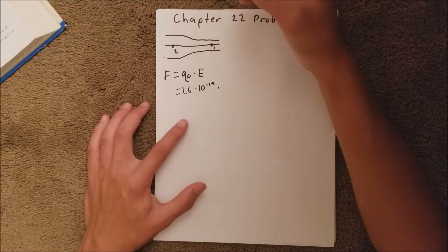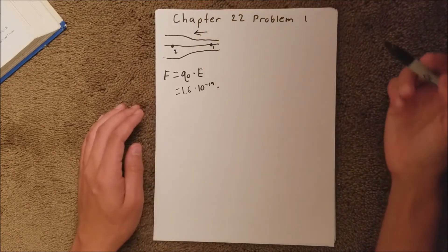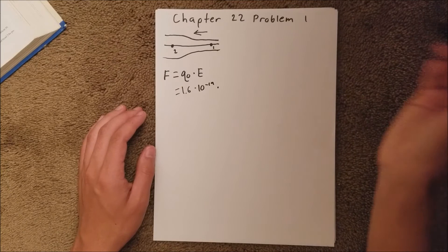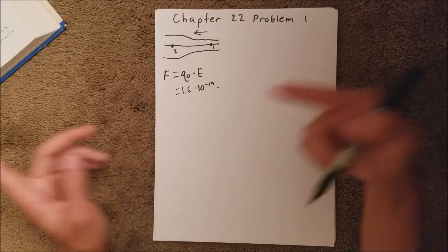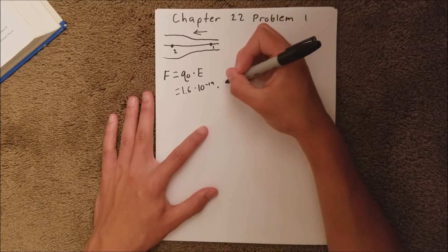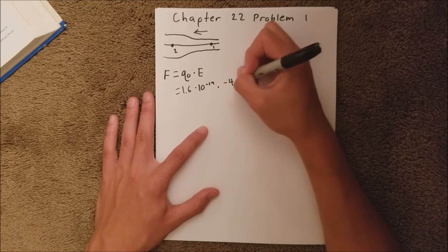in the figure, we are told that the field lines go to the left. It goes in the negative x direction. So we need to account for that here and say that the electric field is negative 40.